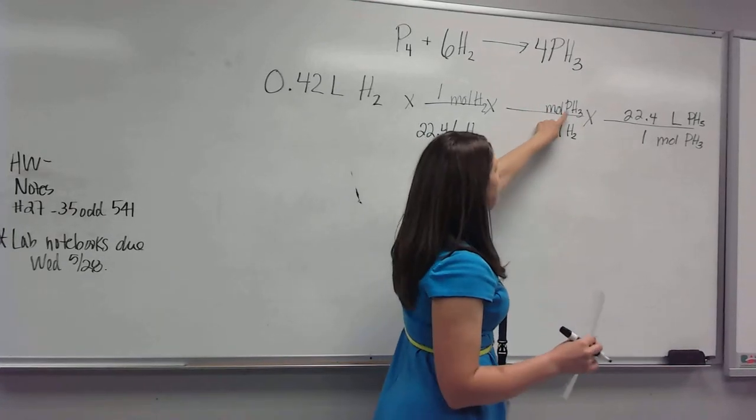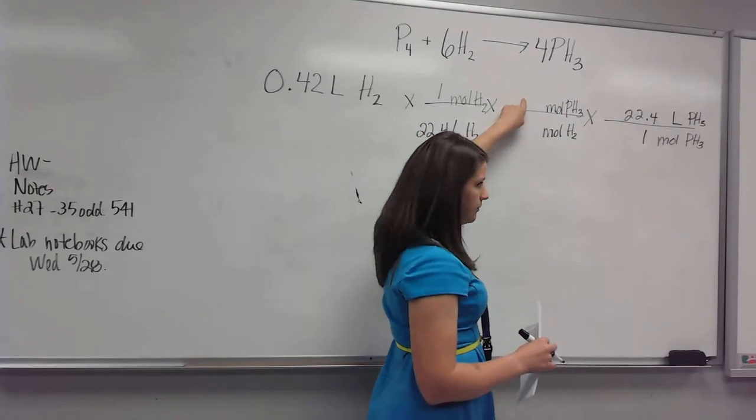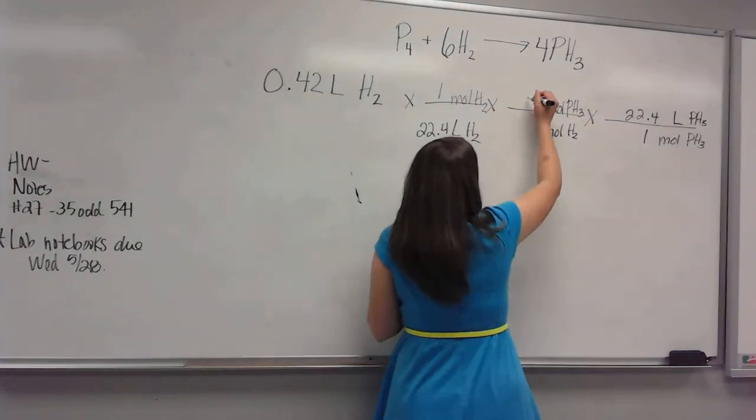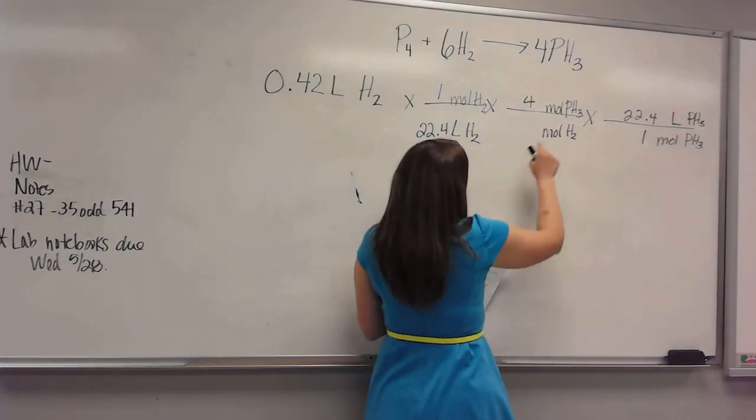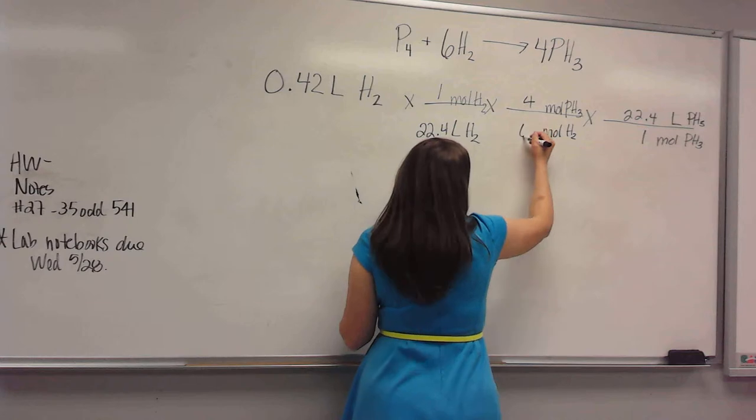So how many moles of PH3 do we have? 4. 4, that big number in front. And how many moles of H2 do we have? 6, that big number in front. Yep.